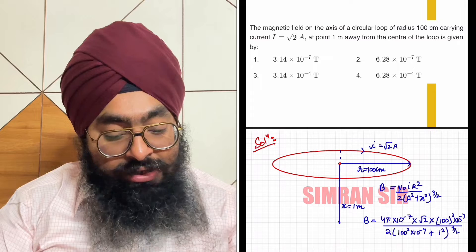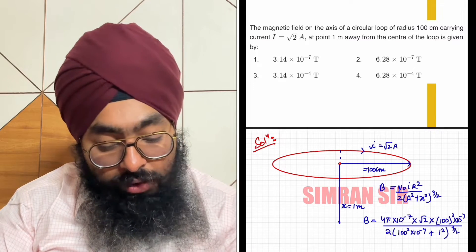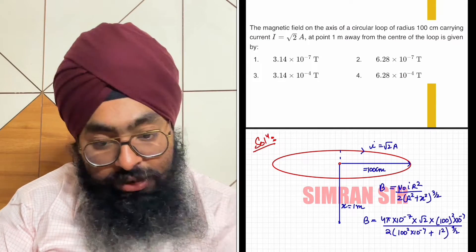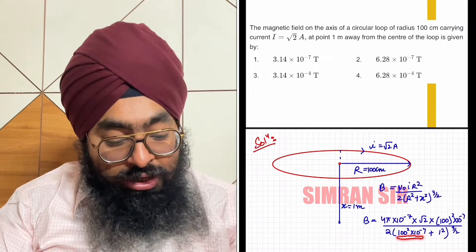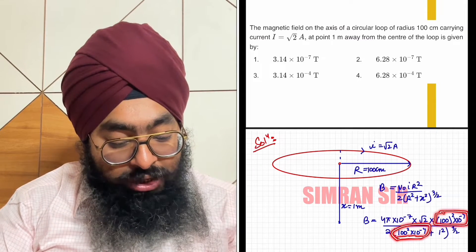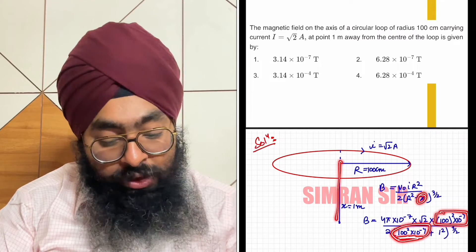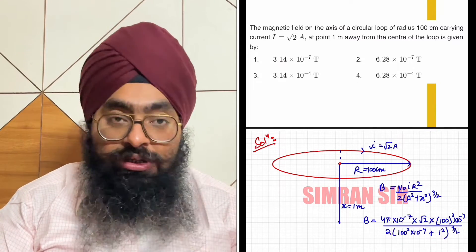Taking 2 as it is, radius is capital R. We have the value here: r square, so this is r square, same r square here. Plus x square, x means axial distance, which is 1 square.